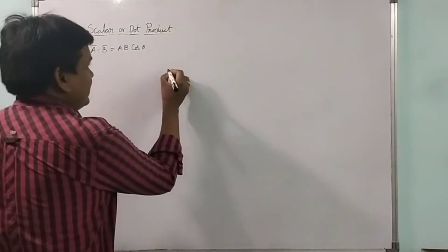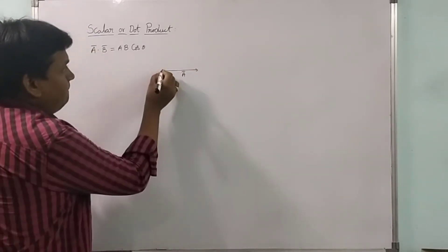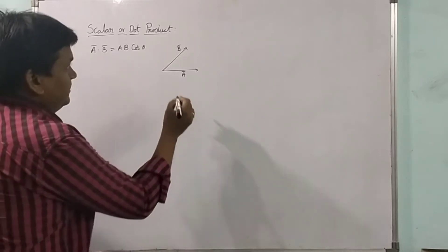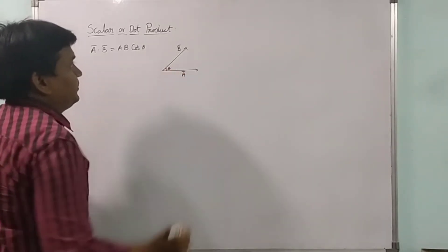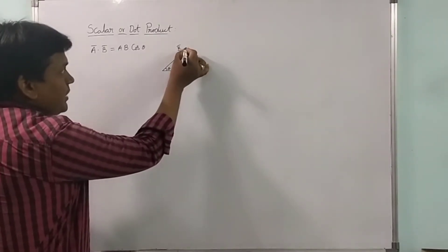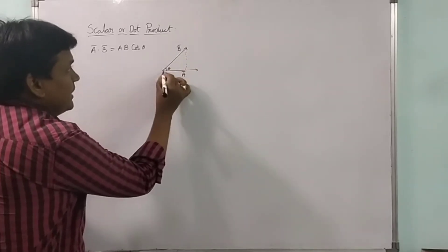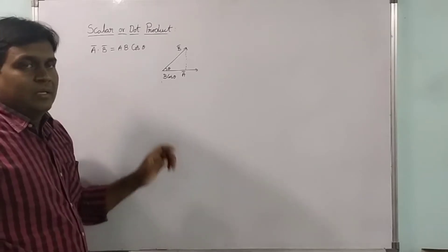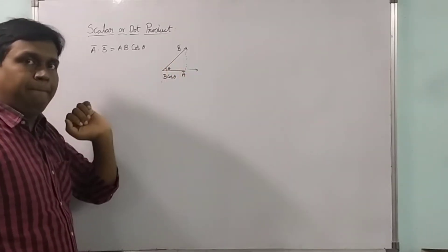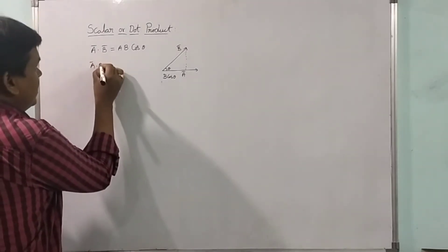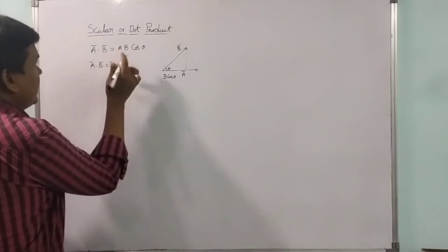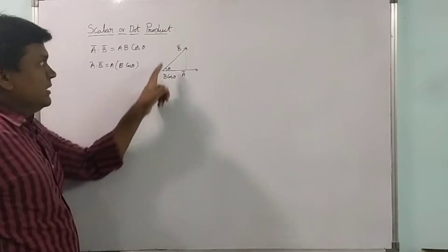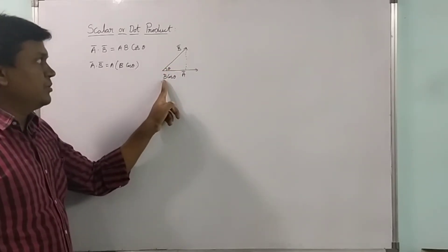Let us consider one situation: a-bar is a vector and b-bar is a vector, and both vectors are making some angle theta. If I draw a perpendicular here, this will be b·cos(θ), which represents the contribution of vector b on vector a. So we can write a-bar dot b-bar equals a·(b·cos θ).